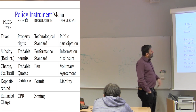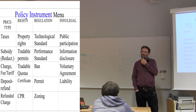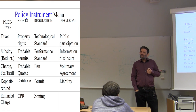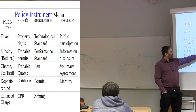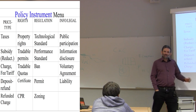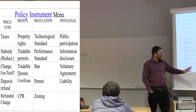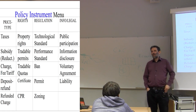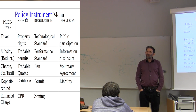Another advantage of quantity regulation is that you can be very precise about when and where. You can have prohibitions that apply just at night, or just in summer, or just in the dry months, or just in certain places. You could do that with prices too, but then it's typically a little more complicated.